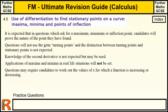Key points to be aware of: it is expected that in questions which ask for maxima, minima, and inflections, candidates will prove the nature of the point they have found. The general idea — the simplest approach — is to use the second derivative. Although knowledge of the second derivative is not expected, it may be used to prove what they are.